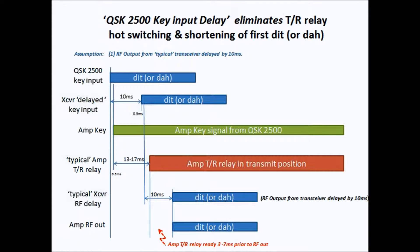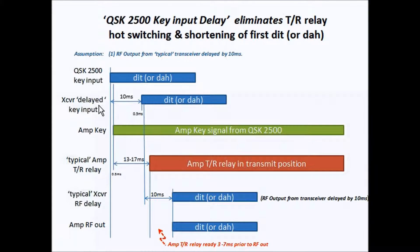The big difference now is your key or paddle input now goes into the QSK 2500, not into the transceiver. The 2500 immediately keys the RF amplifier, so there's only about a half millisecond delay. In the meantime, the key data input to the transceiver is now delayed by 10 milliseconds, so everything in the transceiver is 10 milliseconds delayed.